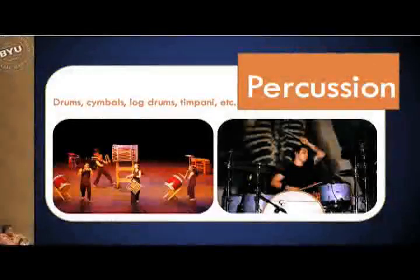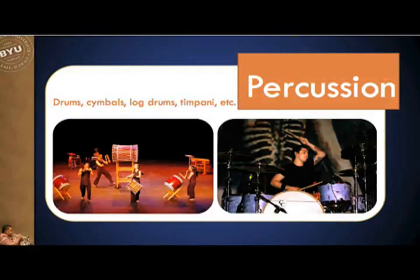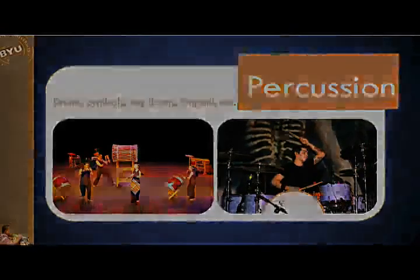The last family in the old classification system is called percussion, which includes drums, cymbals, log drums, and timpani or kettledrums. In our photos we see an ensemble of Japanese drums and a familiar drum set used for rock, reggae, jazz, and many popular genres today.